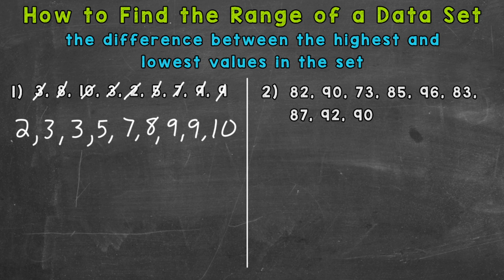We do that by finding the difference between the highest and lowest values in the set. That will give us our range. So our highest here is 10 and our lowest is 2, so we do 10 minus 2. That gives us 8, and that is our range.